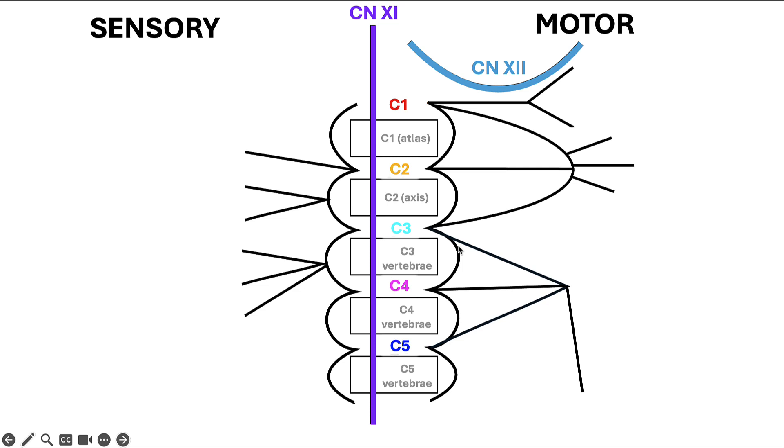So coming out of that C1 dip is the Y we drew, which represents the branches of spinal level C1 which provides motor innervation to two muscles.